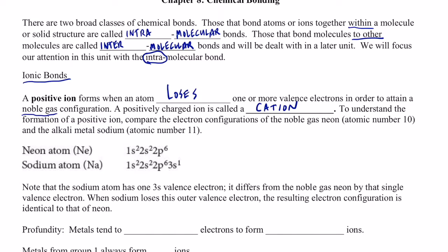In order to understand the formation of a positive ion or a cation, let's compare the electron configurations for the noble gas neon, whose atomic number is 10, and the alkali metal sodium, whose atomic number is 11. So neon's electron configuration is 1s2, 2s2, 2p6. Now, the sodium atom, its configuration is 1s2, 2s2, 2p6, 3s1.